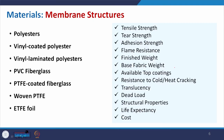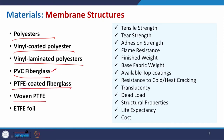Moving forward to available materials in the market: we have polyester, vinyl coated polyester which is better than normal, vinyl laminated polyester, and PVC fiberglass which can also be bent and is useful. PTFE and ETFE are really helpful — PTFE stands for polytetrafluoroethylene. These materials have better response to extreme weather variation and also have better resistance against heat and cold cracking.